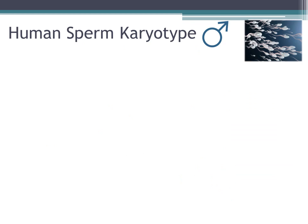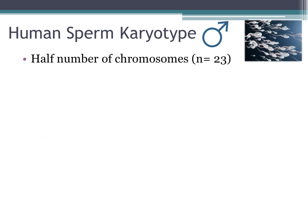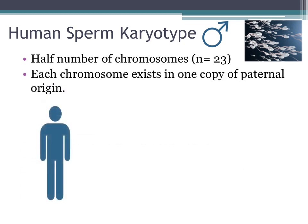In a human sperm karyotype, we have half the number of chromosomes, symbolized by N equals 23. We say N since there is one set of chromosomes, and 23 is half the number of chromosomes in a human karyotype. Each chromosome exists in one copy of paternal origin only, since sperms are produced by males.